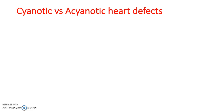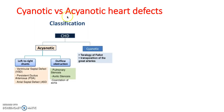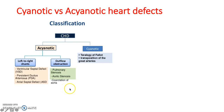Cyanotic versus acyanotic heart defects. Acyanotic defects are left-to-right shunts — this includes a VSD, persistent or patent ductus arteriosus, and atrial septal defects. You can also have acyanotic defects with outflow obstruction, such as pulmonary stenosis, aortic stenosis, or coarctation of the aorta. Cyanotic defects are caused by deoxygenated blood going around the body, and include tetralogy of Fallot or transposition of the great arteries.